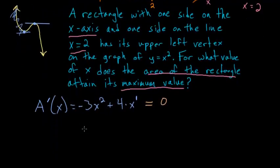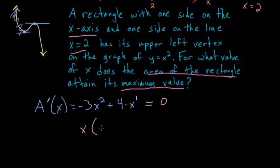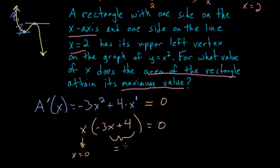So we can factor out an x from this, so we have x times minus 3x plus 4 equals 0. So this equals 0 when x is 0, or when this expression here is equal to 0.